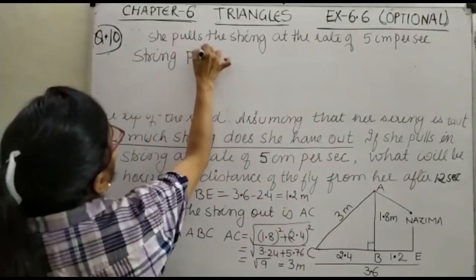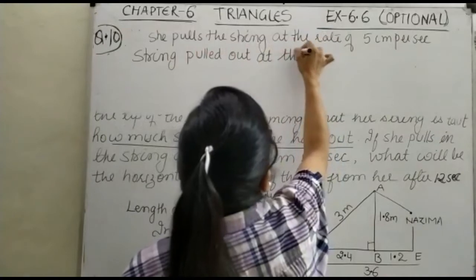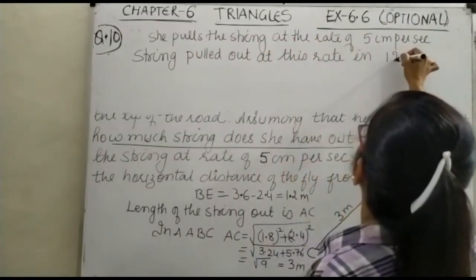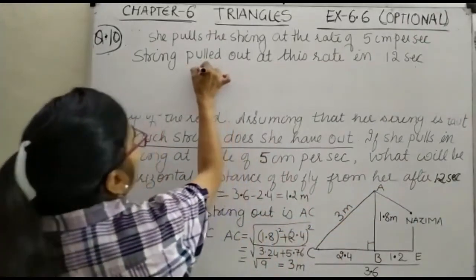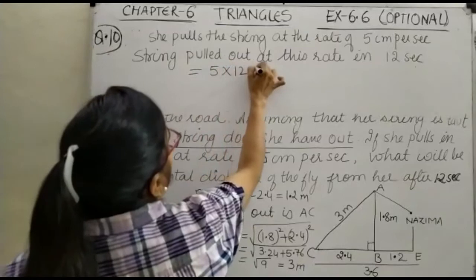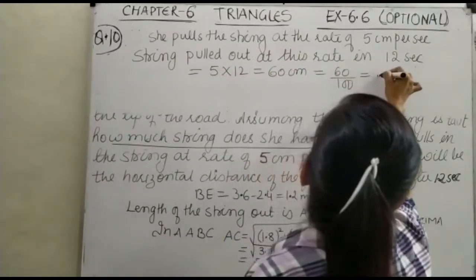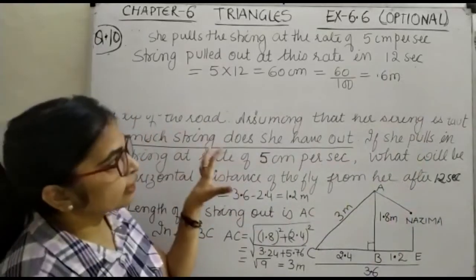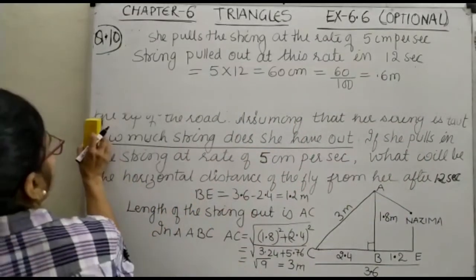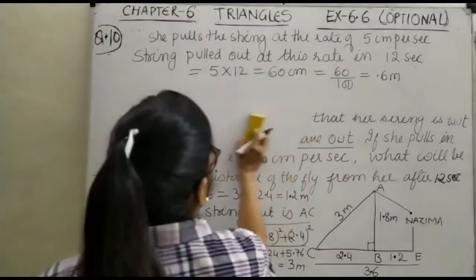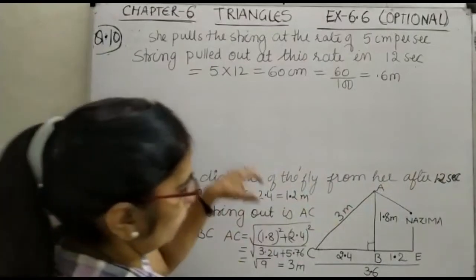String pulled out at this rate in 12 seconds. What will be the horizontal distance of the fly from her after 12 seconds? Is equal to 5 into 12, that is 60 centimeter, which is equal to 60 upon 100, and that is 0.6 meter.